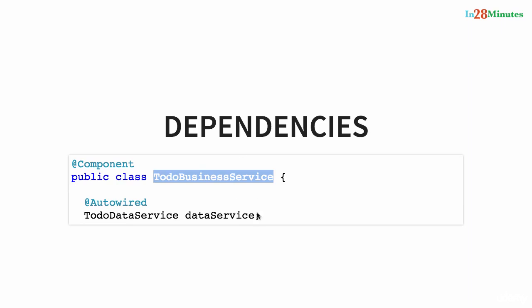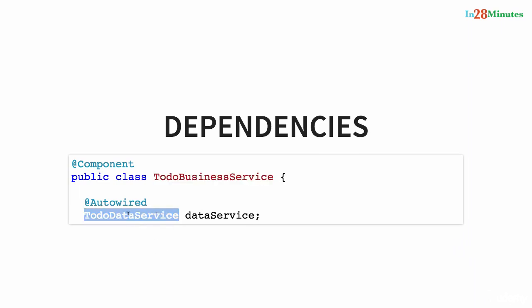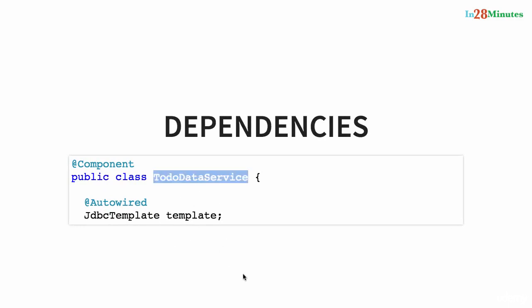The TodoBusinessService needs to get data from the database. It doesn't call the database directly — it talks to the data layer, which is the TodoDataService. So TodoDataService is a dependency of TodoBusinessService. Going one level deeper, TodoDataService needs to fire a query to the database. If it's using Spring JDBC, it makes use of something called JdbcTemplate — which invokes queries and gets details back.